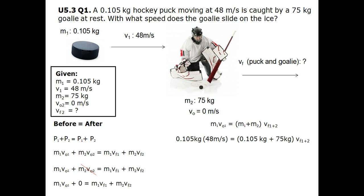Now we can plug in the values. Mass 1 is 0.105 kg times initial velocity 1, 48 meters per second, which equals mass 1, 0.105 kg, plus mass 2, 75 kg, times the final velocity of the hockey puck and the goalie. Doing the multiplication on the left side gives 5.04 kg·m/s equals 75.105 kg times the final velocity.